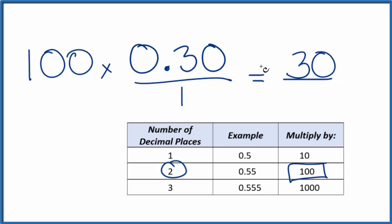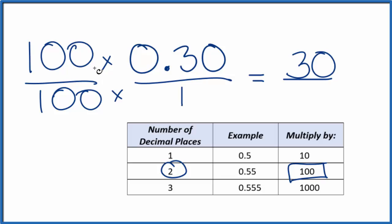But 30, that's not equal to 0.30, so we need to multiply the bottom by 100 as well. If you think about it, 100 divided by 100, that's just 1, so we're multiplying by 1. We haven't changed the value, just the way it's represented.